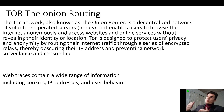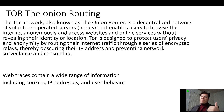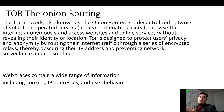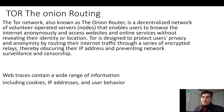Each relay, or the device that the communications are being sent to, only knows the previous location where it was sent from. So if there's five relays, the fifth relay doesn't know the first location — it only knows the location of the fourth relay, and the fourth relay only knows the fifth relay and the relay behind it. That's how it obscures your IP address and prevents network surveillance and censorship.